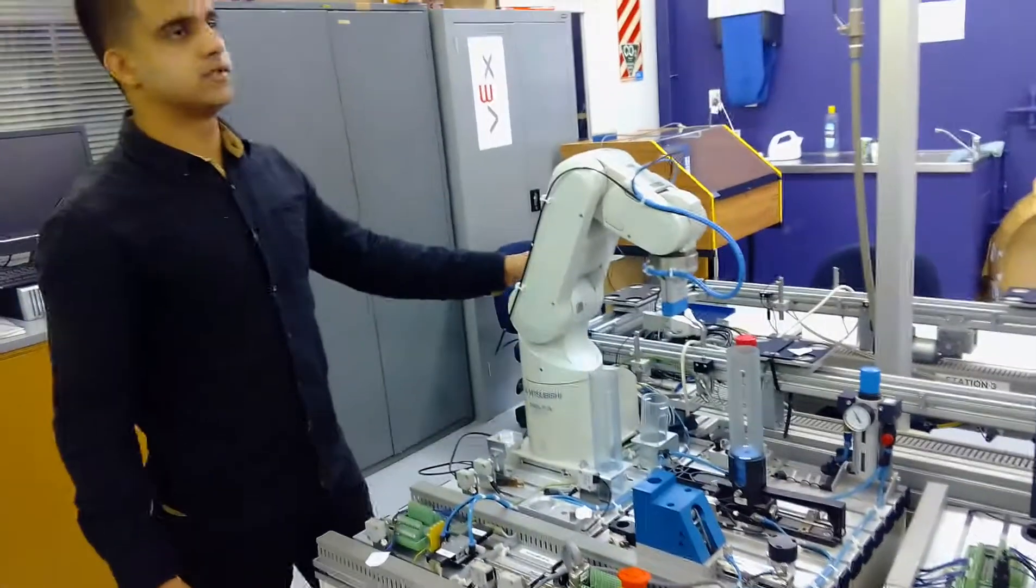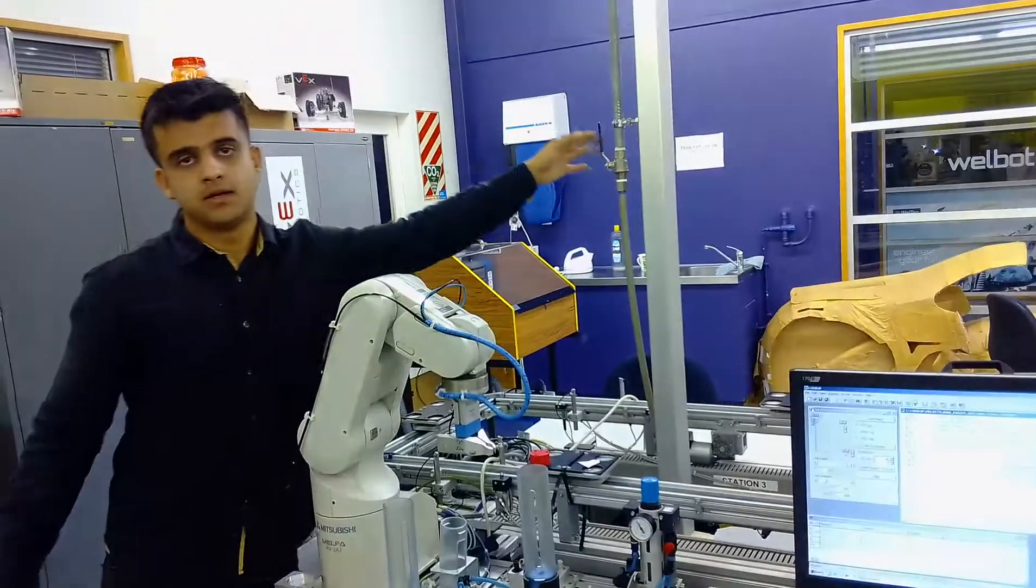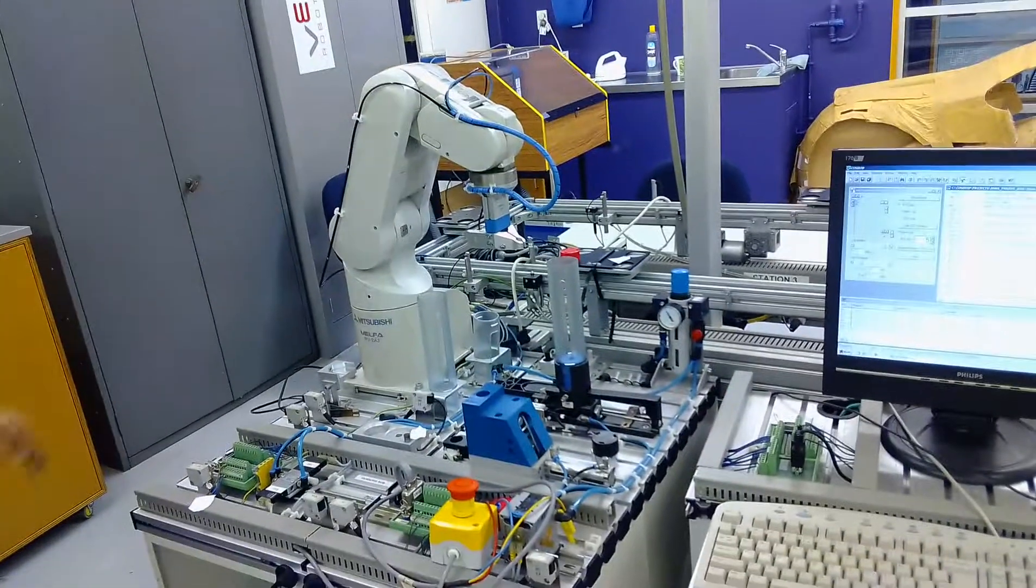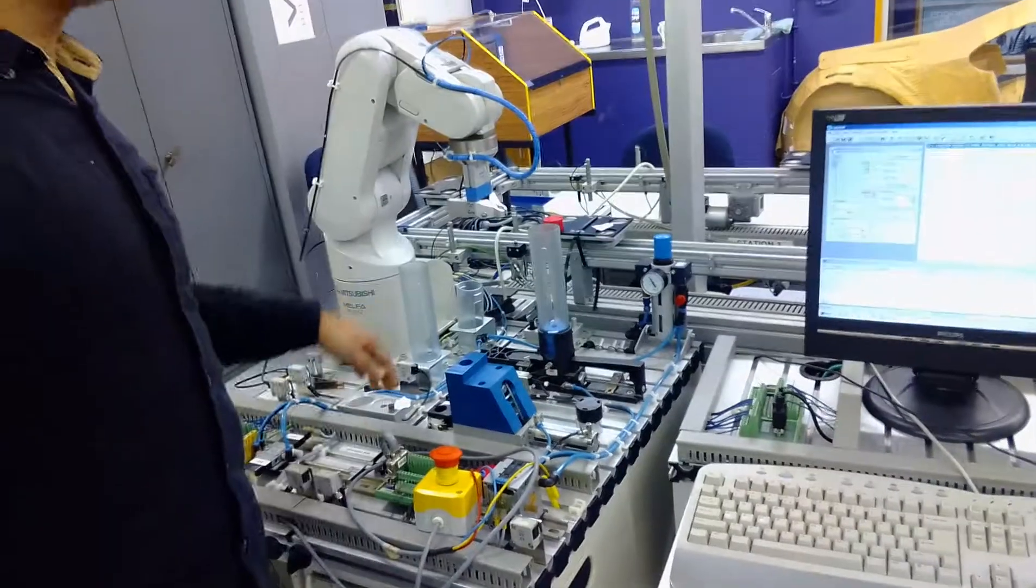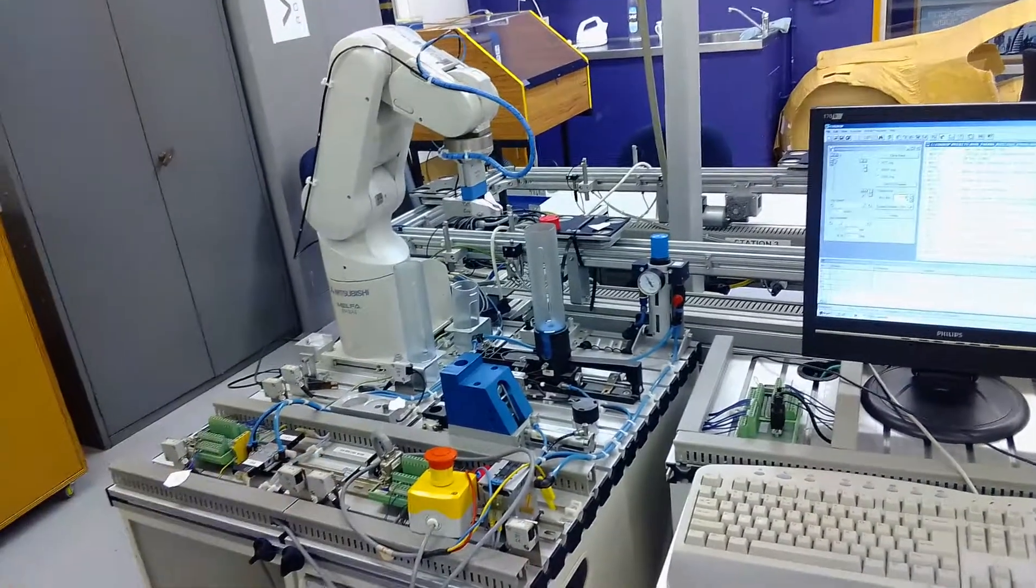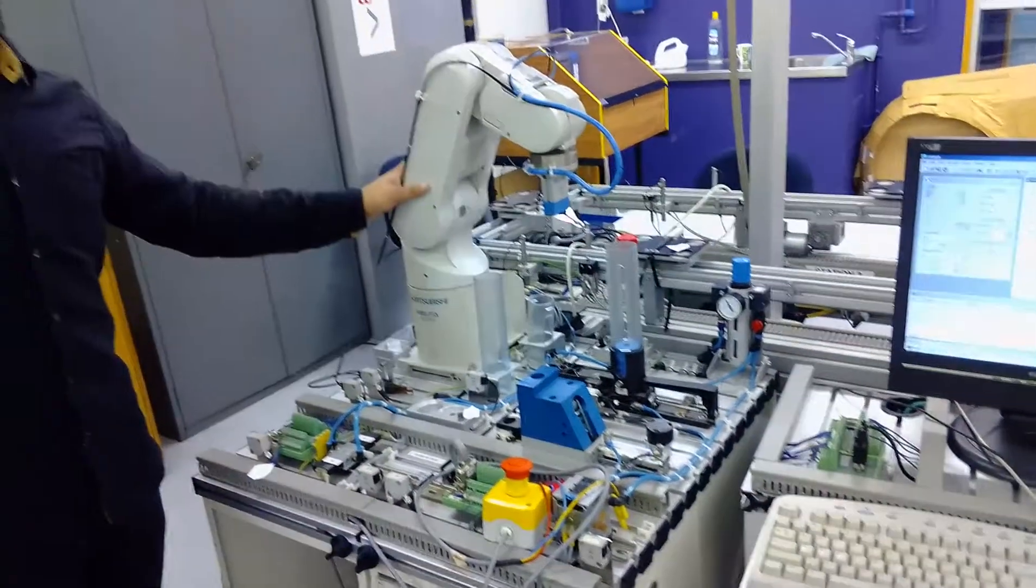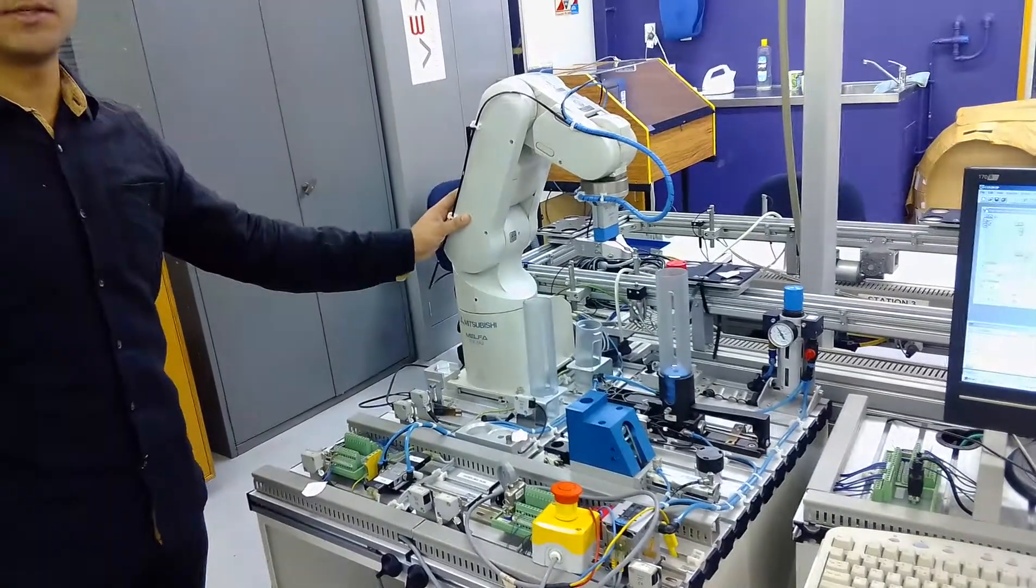We need to first check all the pressure valves are on and make sure there is no obstacle in between the robot. This robot basically has 172-230 volts of AC supply.